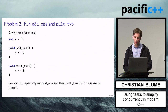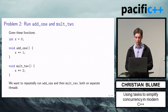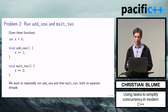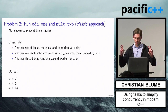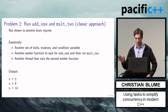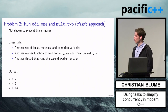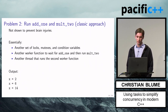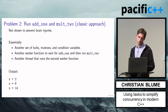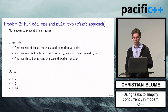Now to the second problem. Previously we just wanted to run a single function asynchronously. Now we have two functions we want to run on separate threads, but we also want to handle the dependency between them. We want 'add_one' to execute first on a different thread, and then once that is finished, run 'mult2' on a different thread. The classic approach with mutexes is so complicated that I'm just not going to show it to prevent brain injuries — essentially you'd need another set of locks, mutexes, and condition variables, and another worker function. The output would be 2, 6, 14 because you add one then double the result each time.